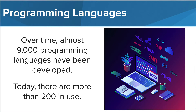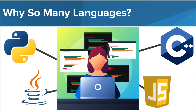Even though 200 is much less than the total 9,000 languages, 200 is still a lot of languages. Why do we have so many? Well, different languages have been developed to solve different problems. Not every computer or computer program is designed to solve the same problem, so languages have been created that will make solving certain types of problems easier. We have languages specifically designed to manipulate data, languages designed to make web pages more interactive, languages that help programmers develop apps, and so much more.